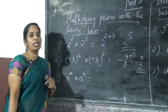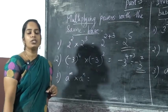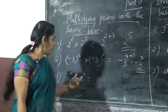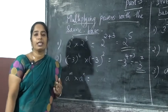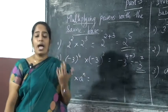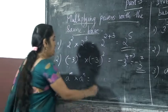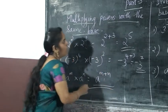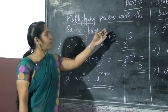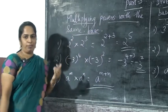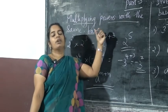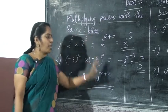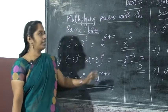A raise to M into A raise to N. Here also we can see that A is the base, and the powers are different. So we can add that power. Here, A raise to M plus N. Hope that you understand this: multiplying powers with the same base. If the same base is there, we must add the powers.